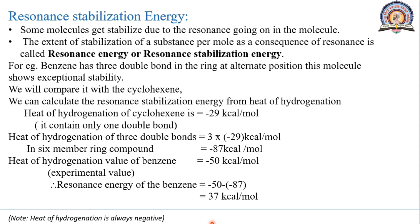Cyclohexane is a 6-membered ring with a single double bond. We can calculate the Resonance Stabilization Energy from heat of hydrogenation. The heat of hydrogenation of cyclohexane is equal to minus 29 kcal per mole. Taking this value for 3 double bonds — that is, multiplying by 3 — we get 3 × (−29) = −87 kcal per mole.